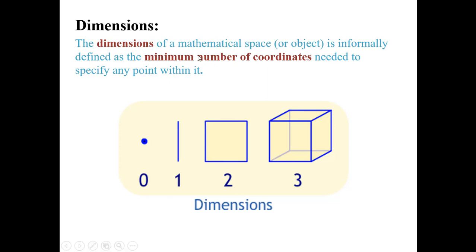What are the dimensions of a mathematical space? We have to tell the position of a point. So the minimum number of coordinates required to specify a position are the dimensions of a mathematical space.